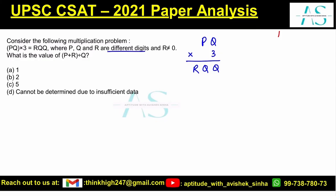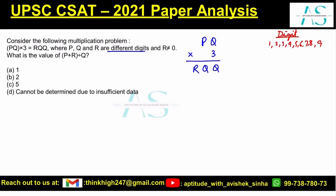Let's start by assuming the digits. We can use digits 1 through 9. We have to be very smart with our calculation. The key insight is: Q multiplied by 3 must give a result whose units digit is Q itself.